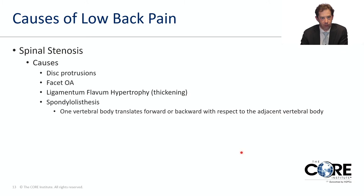Spinal stenosis is a condition where the central canal, where all the nerves travel through, is being compressed by arthritic conditions. Common causes include disc protrusions, arthritis of the facet joints, and hypertrophy of the ligamentum flavum, which thickens with age and puts more pressure on the nerve roots. There is also spondylolisthesis, where one level is translated forward or backward relative to the adjacent level, which can also put pressure on the nerve roots depending on severity.